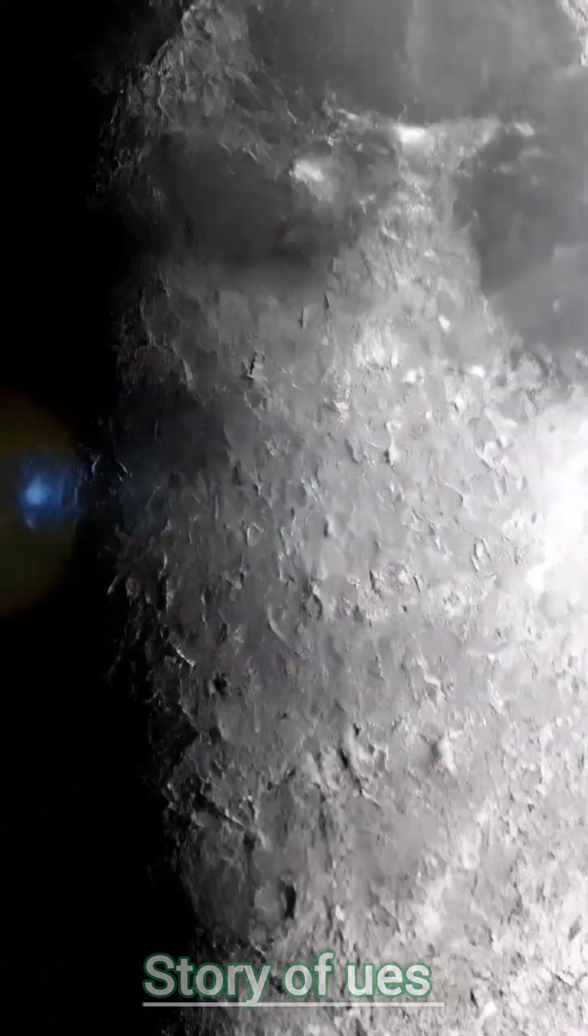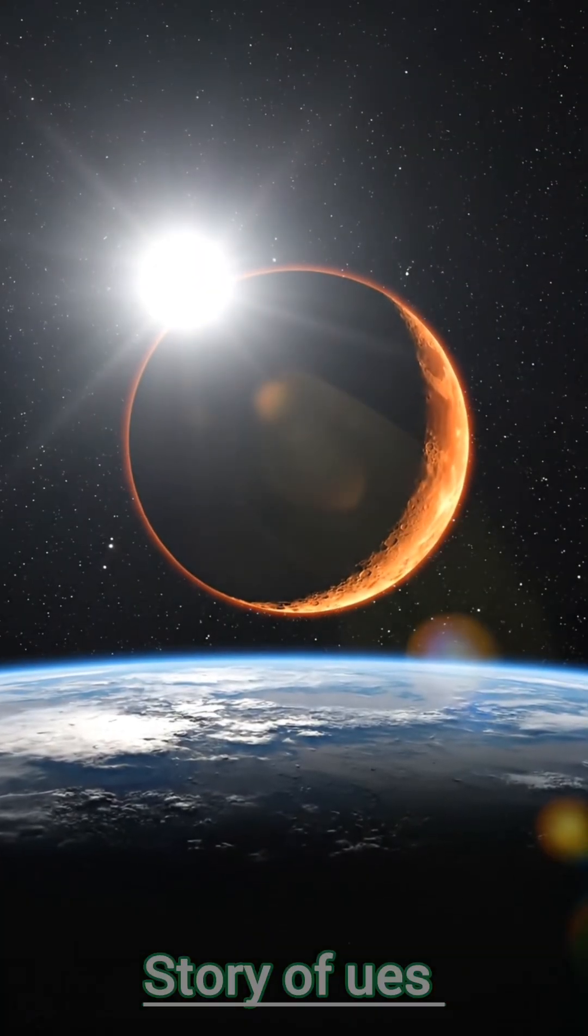The Moon orbits the Earth in 27.32 days, and due to its rotation, the same side always faces Earth.